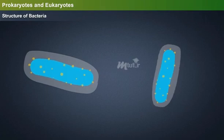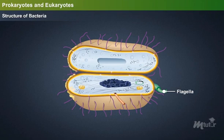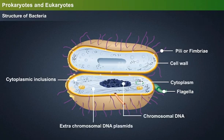Structure of bacteria: Each bacterium consists of capsule or slime layer, flagella, pili or fimbriae, cell wall, cytoplasm, cytoplasmic inclusions, chromosomal DNA, and extra-chromosomal DNA called plasmids.